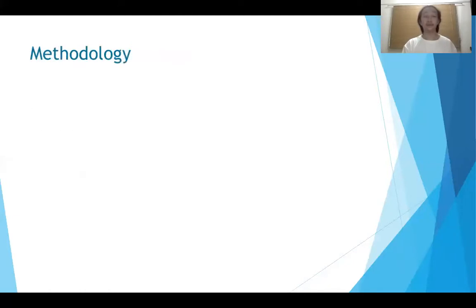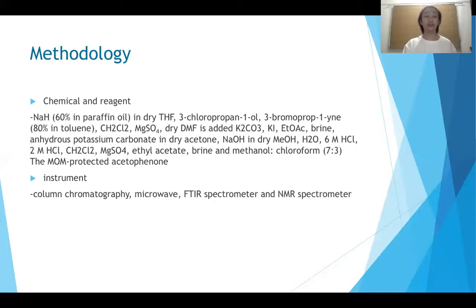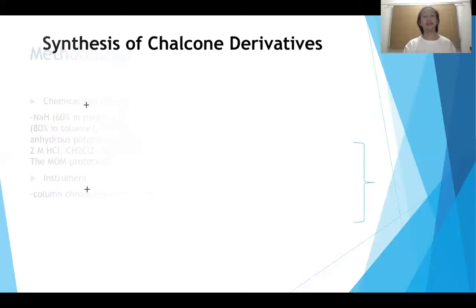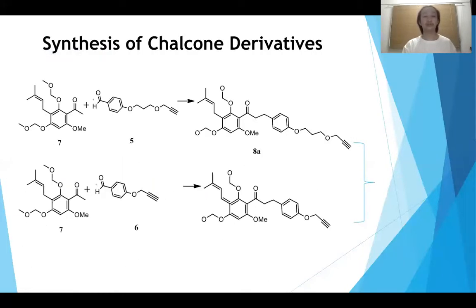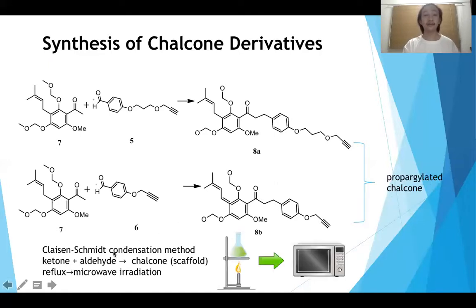Moving on to methodology. The chemical reagents are all prepared by FIRST labs, and the instruments I'll be using are column chromatography, microwave, FTIR spectrometer, and NMR to characterize the chalcone synthesized based on the FTIR and NMR database. In my synthesis process, the first equation uses the Claisen-Schmidt condensation method — a ketone reacting with an aldehyde under base or acid to produce the first proposed chalcone scaffold, where any heating process or reflux is replaced by microwave irradiation.